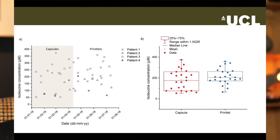The children took isoleucine capsules for three months, followed by printed tablets for three months. Let's look at the isoleucine concentrations of the participants in the blood. These are plotted as a scattergram on the left of your screen and as average values on the right. The printed tablets were able to deliver isoleucine successfully, and moreover, the range of plasma concentrations achieved was tighter with the printed tablets than the capsules.